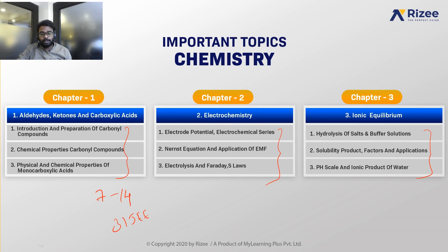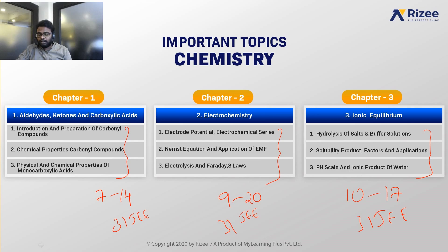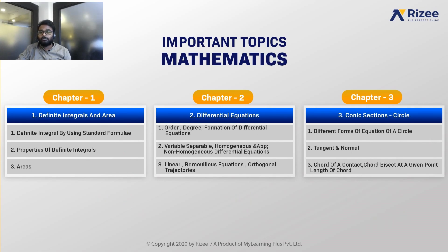From electrochemistry, questions have appeared 9 to 20 times in the JEE Mains exam from these particular topics. In ionic equilibrium, there is a probability of 10 to 17 times being asked out of 31 times in the JEE Mains exam. In Mathematics, definite integrals and areas is a very important chapter, and these three topics have to be prioritized. You have to be thorough and revise well before the final examination, and in differential equations, you should not take a chance of making mistakes.